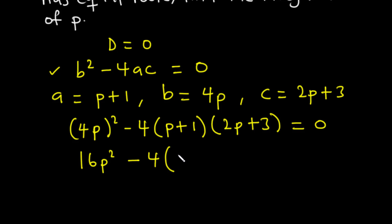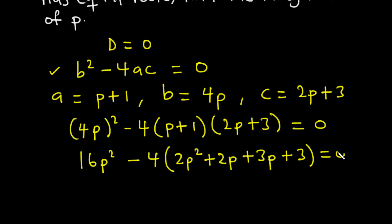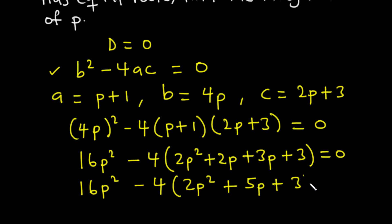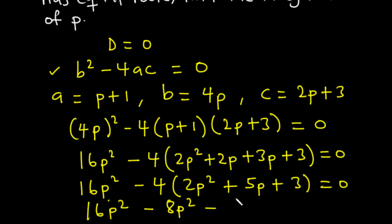Then we have minus 4 into brackets. Expanding: p times 2p is 2p², 1 times 2p is 2p, p times 3 is 3p, and 1 times 3 is 3. Simplifying inside the bracket gives 2p² + 5p + 3. So we have 16p² - 4(2p² + 5p + 3), which expands to 16p² - 8p² - 20p - 12.